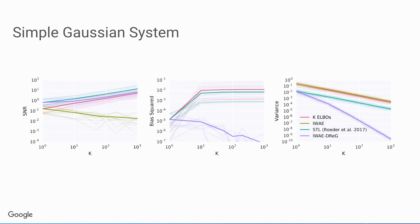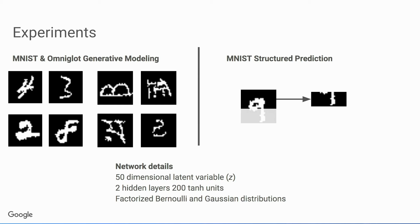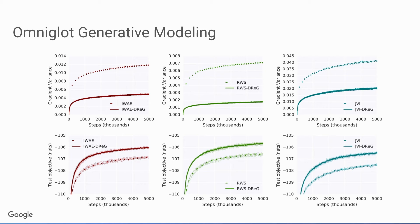We applied these ideas to more complex datasets: handwritten digits and handwritten alphabet symbols (Omniglot and MNIST). Plotting gradient variance across different estimators, the doubly reparameterized versions (solid lines) achieve much lower variance than the original estimators (dashed lines) across different training techniques — IWAE, re-weighted wake-sleep, and jackknife variational inference. On the test objective, this translates into better performance across all datasets and all estimators.